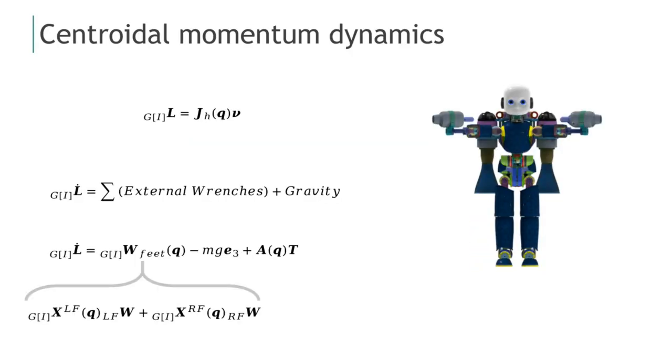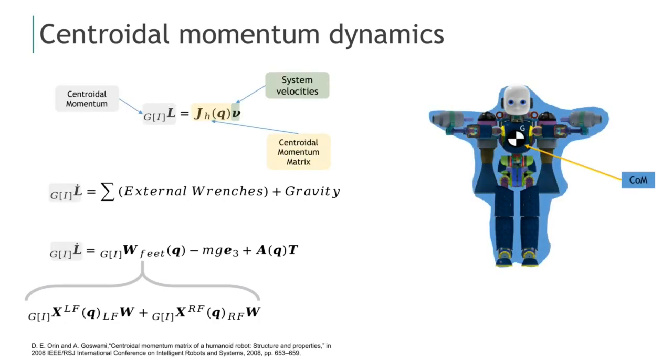The estimator exploits the centroidal momentum of the robot, which can be computed using the system velocity and the centroidal momentum matrix. Moreover, the dynamics of the centroidal momentum are simply the sum of the external forces represented in the centroidal frame. These dynamics can be exploited if we assume that the external forces are only the thrust intensities, the feet contact wrenches when the robot is standing on the ground, and the gravity forces.